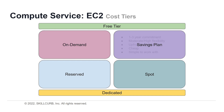Next, we have savings plans available on AWS. Savings plans are a flexible pricing model that offer low prices on EC2 and Fargate usage in exchange for a commitment to a consistent amount of usage, measured in dollars per hour for a one or three year term. There is an upfront payment involved, but they're simple to work with and pretty cheap. The catch is that you must stay committed for the term you've signed on.